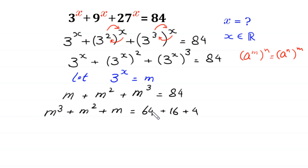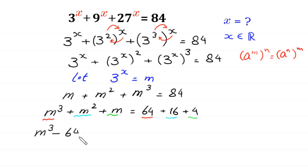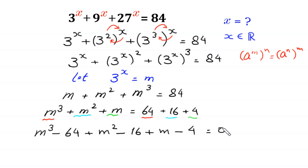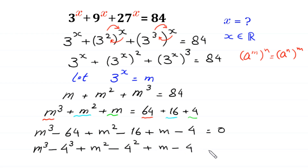We move all three terms to the left side, grouping 64 with m cubed, 16 with m squared, and 4 with m. This gives m cubed minus 64 plus m squared minus 16 plus m minus 4 equals 0. We recognize that 64 is 4 cubed and 16 is 4 squared, so we write m cubed minus 4 cubed plus m squared minus 4 squared plus m minus 4 equals 0.